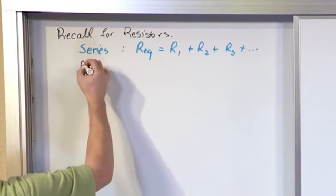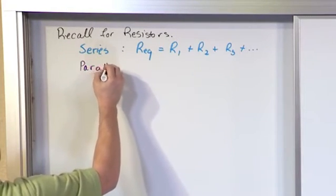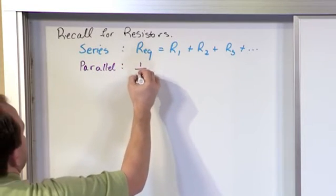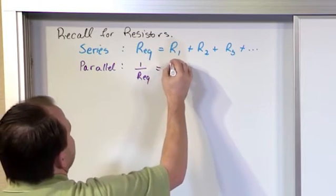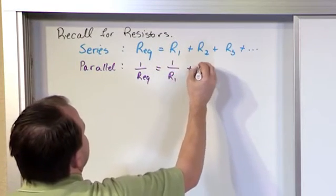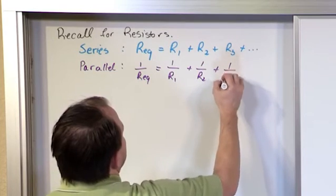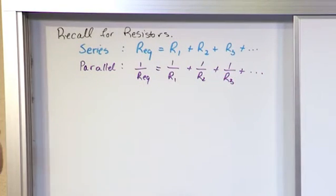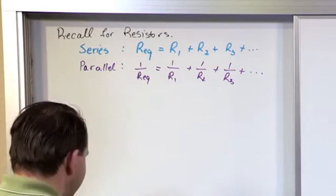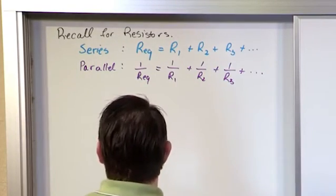And if they were in parallel, then what you have is 1 over REQ. 1 over R equivalent is 1 over R1 plus 1 over R2 plus 1 over R3 plus dot dot dot. However many resistors you have in parallel, that's how you handle it. So that's what we've done up until now.